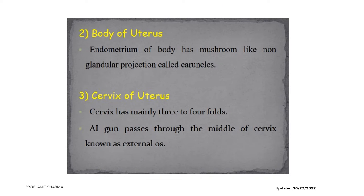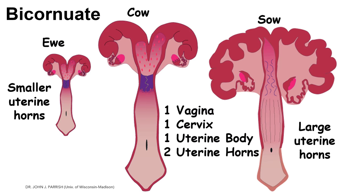The body of the uterus has mushroom-like non-glandular projections called caruncles. The caruncles form the placentome by connecting with the cotyledon, found in the cow and ewe. The cervix of the uterus has mainly three to four annular folds in the cow, and the AI gun passes through the middle of the cervix, known as the cervical lumen, during artificial insemination. The uterus is the reproductive organ with the most species variation.